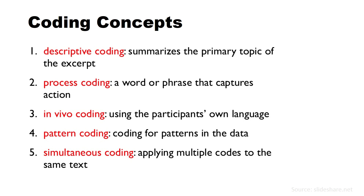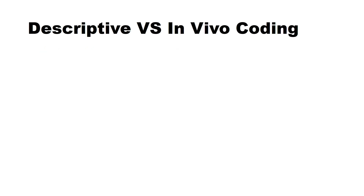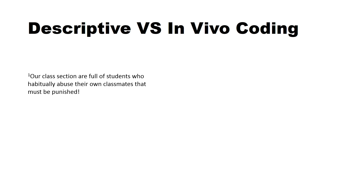Let me show you some examples on how you can code. We are going to deal with descriptive and in vivo coding and differentiate the two of them. I'm going to use the same statement and create a code for it. The statement is: 'Our class section are full of students who habitually abuse their own classmates that must be punished.' Let's say the interview question is about what are your experiences as students.